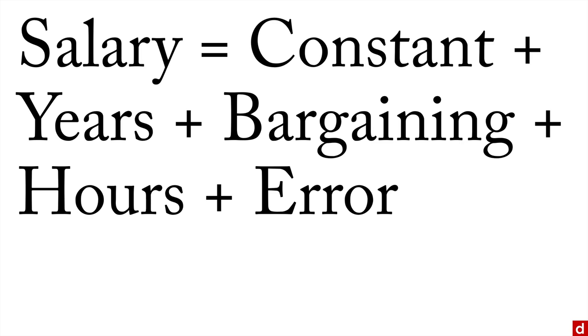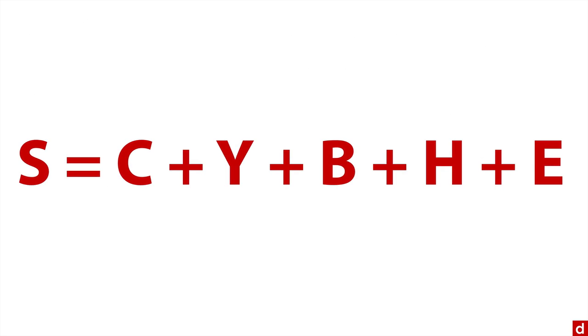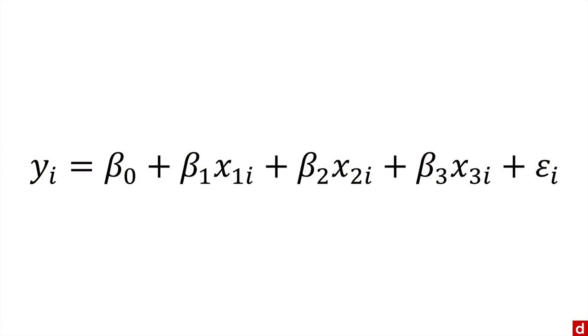Now, if you want to abbreviate this, you can write it like this: s = c + y + b + h + e. Although it's more common to write it symbolically like this.